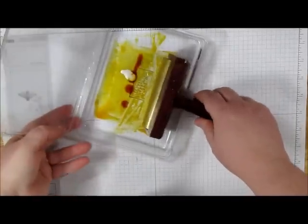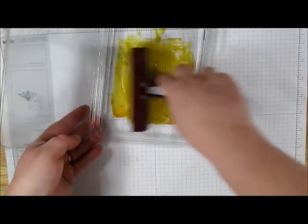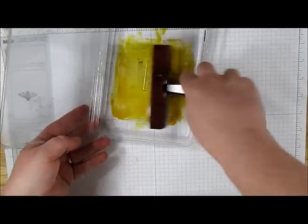Then using your brayer, just move the ink and the shimmer paint around until they're well combined.